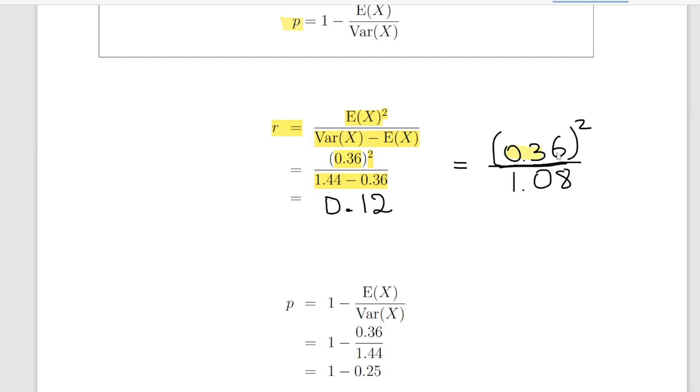0.36 squared. 1.44 minus 0.36, that is 1.08. Do a little bit of calculator work, and we should get an answer of r is equal to 0.12.